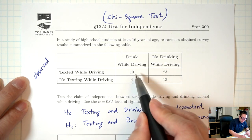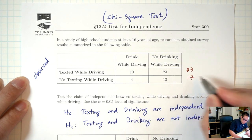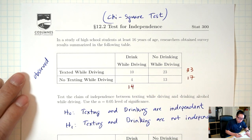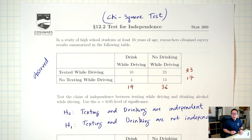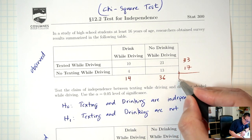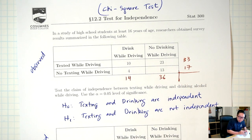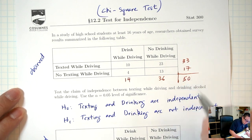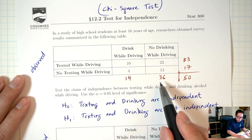To calculate the expected counts, I'm going to go back to my original table and find the row totals and the column totals. The row total for the first row: 10 plus 23 is 33. The total for the second row: 4 plus 13 is 17. I also need my column totals: 10 plus 4 is 14 for the first column; 23 plus 13 is 36 for the second column. And then I need the grand total — the total of everybody in the study: 10 plus 23 plus 4 plus 13 is 50. You could also get 50 by adding the row totals (33 plus 17) or the column totals (14 plus 36).